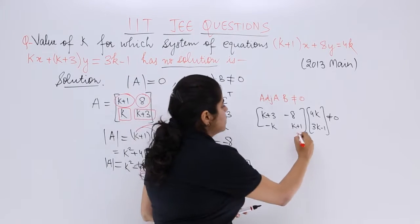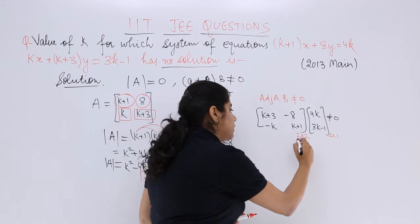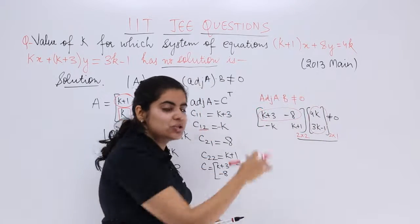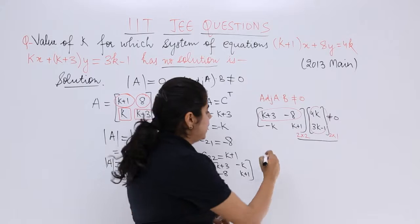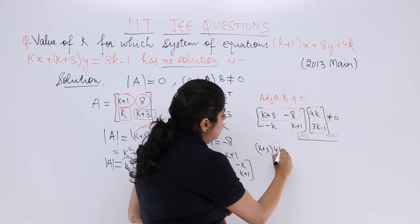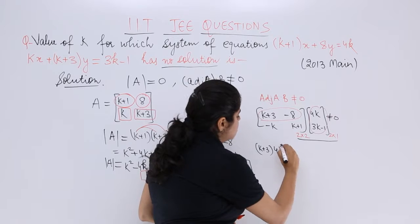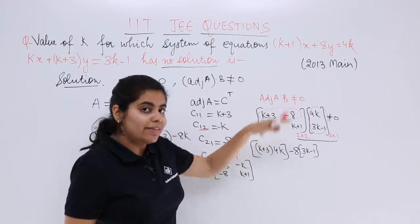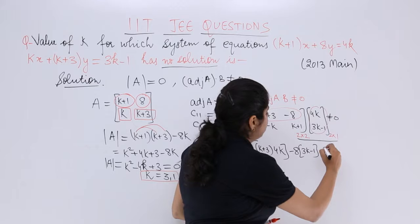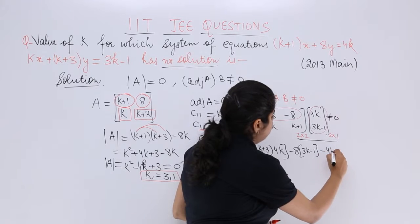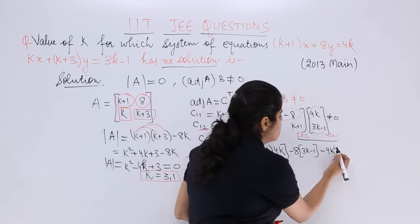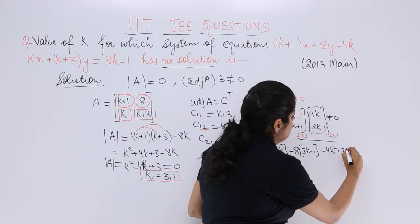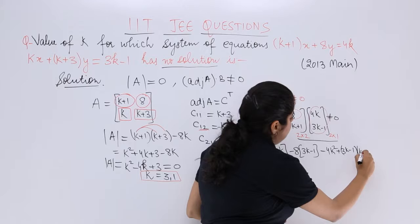This is a 2×2 matrix times a 2×1 matrix, giving 2×1. First row, first column: (k+3)×4k minus 8×(3k-1). Second row: -k×4k = -4k². Then (k+1)×(3k-1).